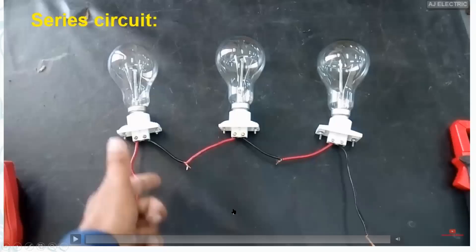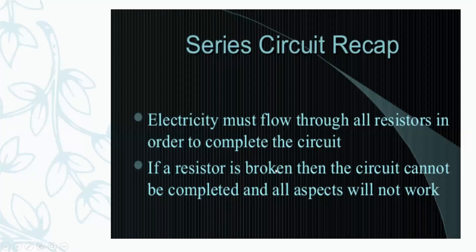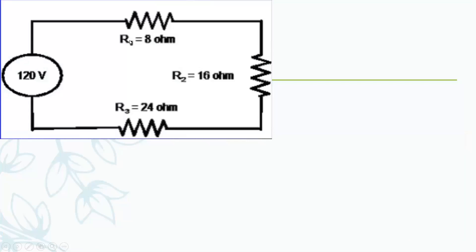Is it clear? Yes. As I told you: the current is the same everywhere — as shown in the video. But the voltages are different depending on the amount of resistance — it acts as a voltage divider.